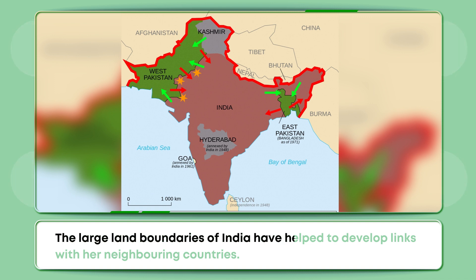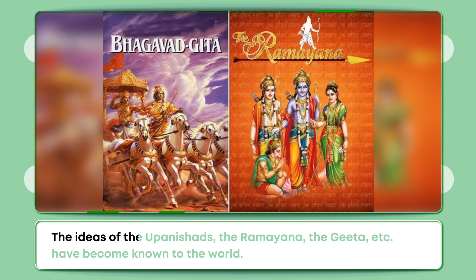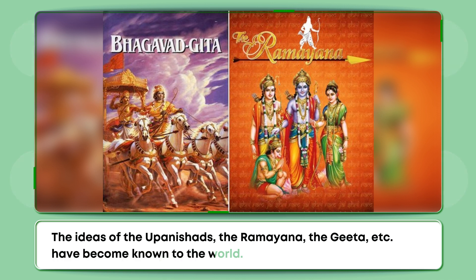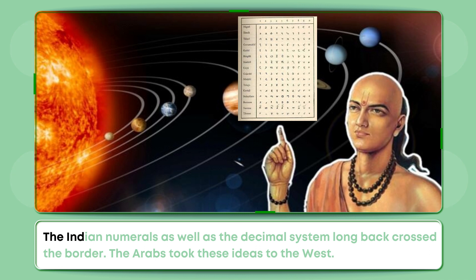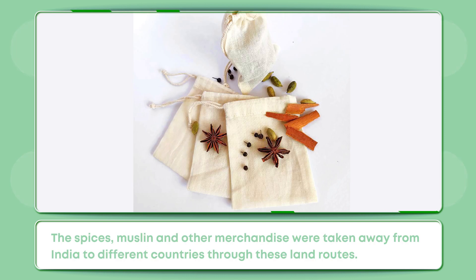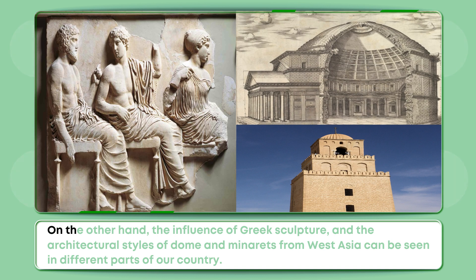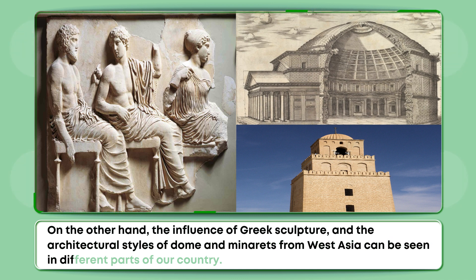The large land boundaries of India have helped to develop links with her neighboring countries, contributing to the exchange of ideas and commodities since ancient times. The ideas of the Upanishads, the Ramayana, the Gita, etc. have become known to the world. The Indian numerals as well as the decimal system long ago crossed the border, and the Arabs took these ideas to the west. The spices, muslin and other merchandise were taken from India to different countries through land routes. The influence of Greek sculpture and the architectural styles of dome and minarets from West Asia can be seen in different parts of our country.